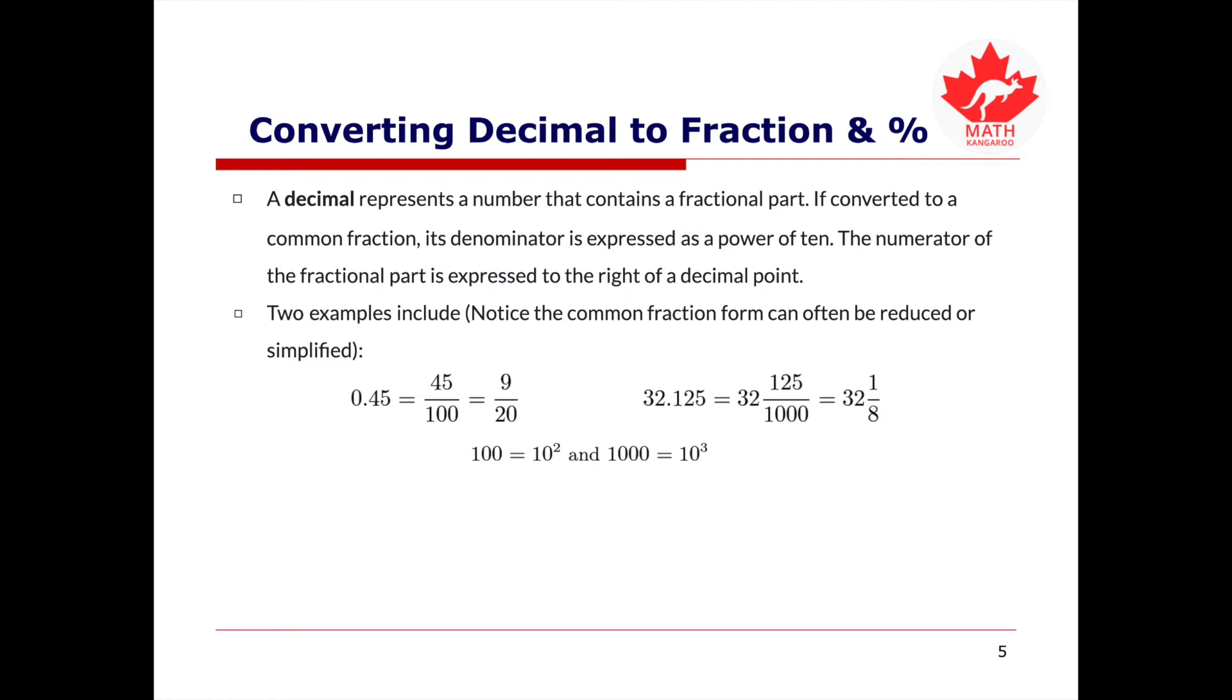The second example is we have 32.125. Notice that 0.125 can be converted into 125 over 1000. Therefore, 32.125 is equal to 32 and 125 over 1000, and that's equal to 32 and 1 over 8.